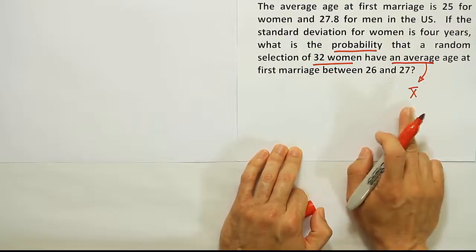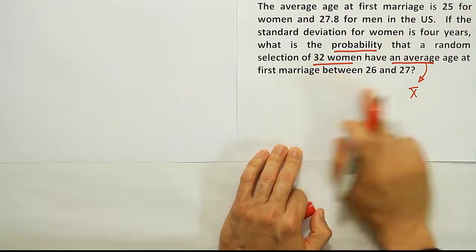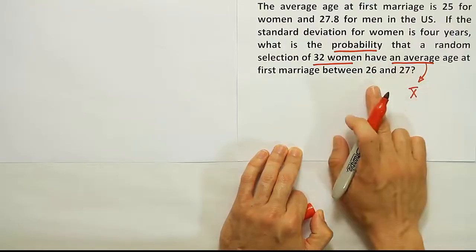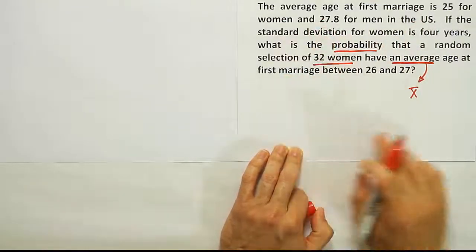And they're asking, what's the probability that that average would be between 26 and 27, given the other information in the problem?